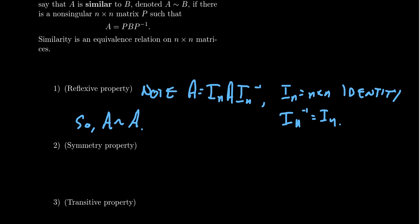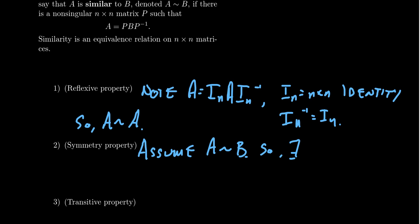How do we show symmetry? For symmetry, we have to start with an assumption: assume that A is similar to B. That's how you always start a symmetry property proof — start with one assumption about the relationship. Then you unravel the definition: there exists some non-singular matrix P such that A equals P B P inverse. That's what it means for the two things to be related.